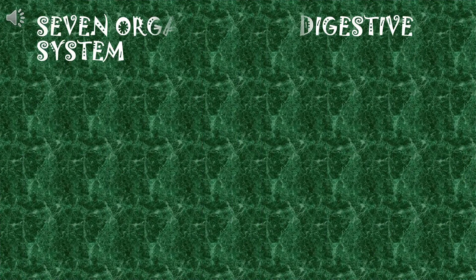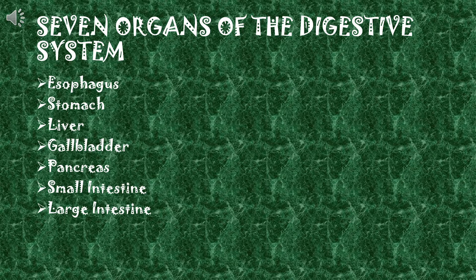The seven organs of the digestive system are: Esophagus, Stomach, Liver, Gallbladder, Pancreas, Small Intestine, and Large Intestine.